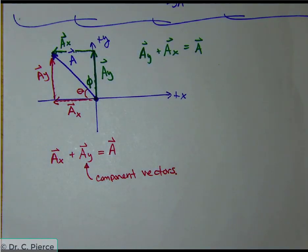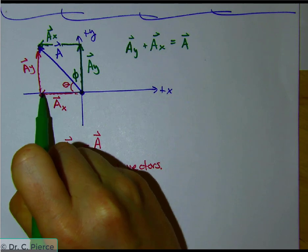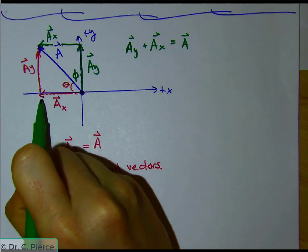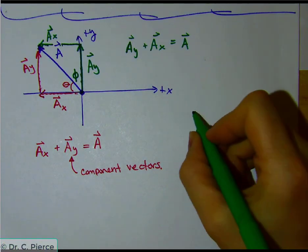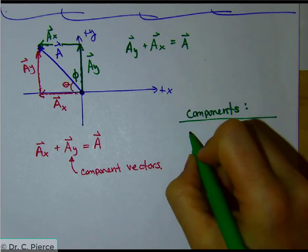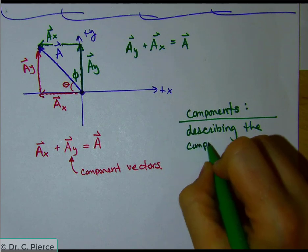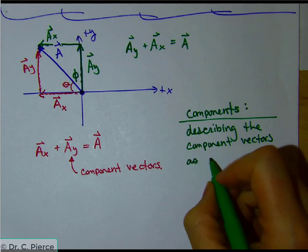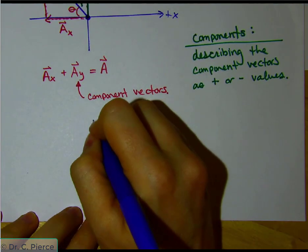We don't use component vectors a whole lot. We're going to take it one step further and instead of describing this as a vector, describe it as a positive or negative number. In this case, arrow ax is pointing in the negative x direction, so we describe it as a negative value. When we do that, we call them components — describing the component vectors as positive or negative values.